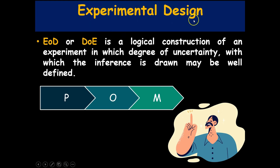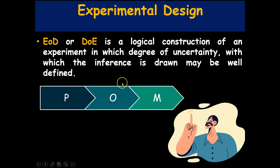Experimental design, or the design of an experiment, is a logical construction of an experiment in which the degree of uncertainty with which the inference is drawn may be well defined. It involves planning the experiment, obtaining relevant information from the experiment, and making a statistical analysis of the data obtained from the experiment.